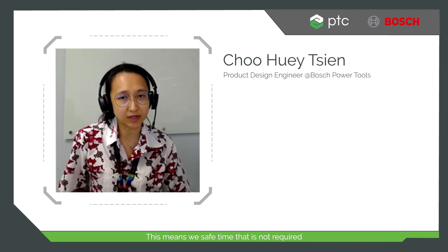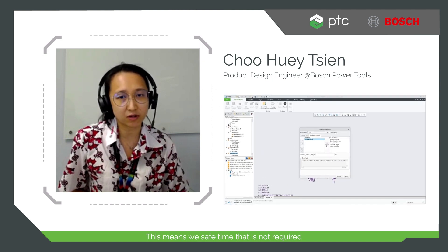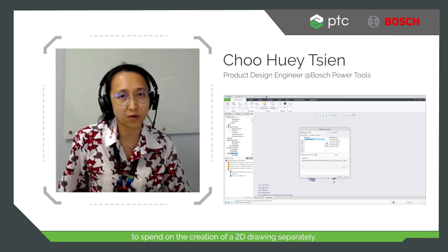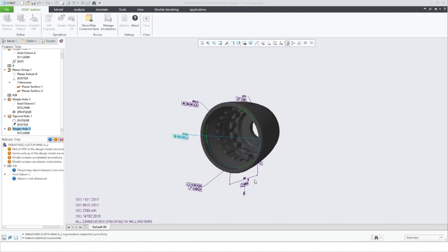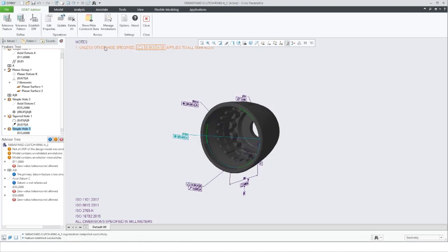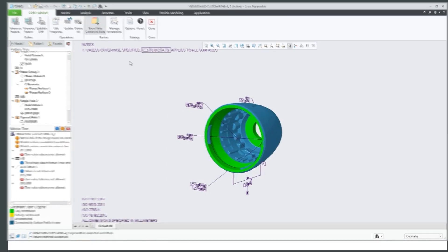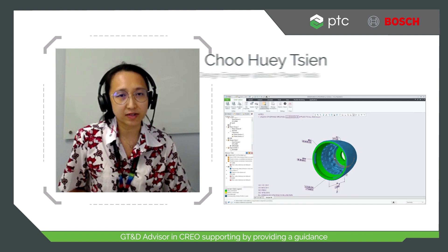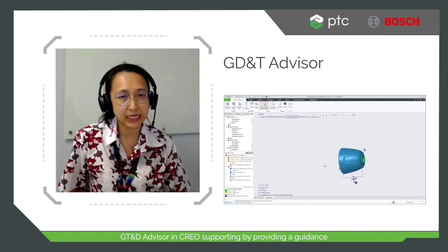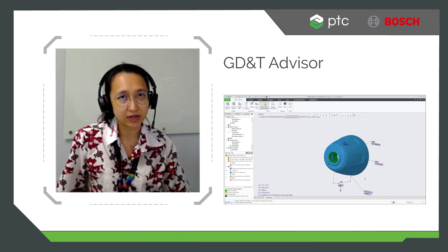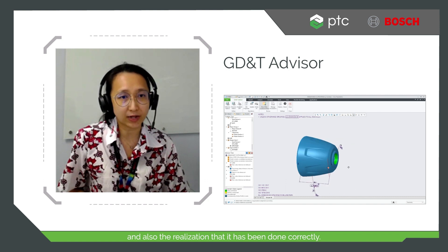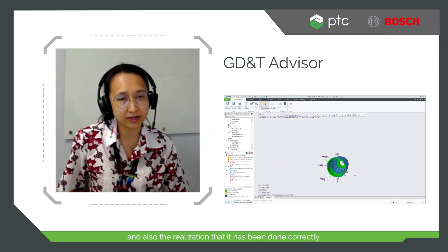This means designers save time by not having to create 2D drawings separately. The GD&T Advisor in CREO supports engineers by providing guidance on GD&T applications and validation that it has been done correctly.